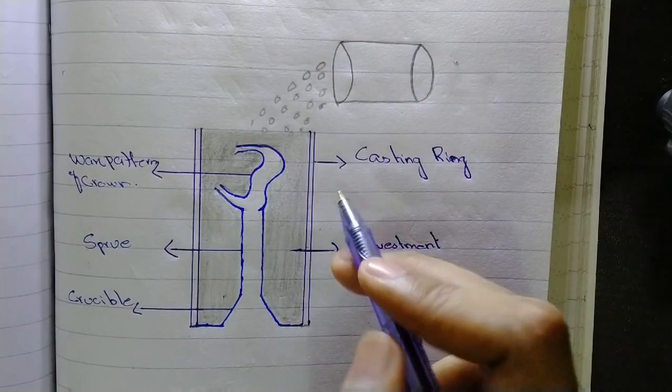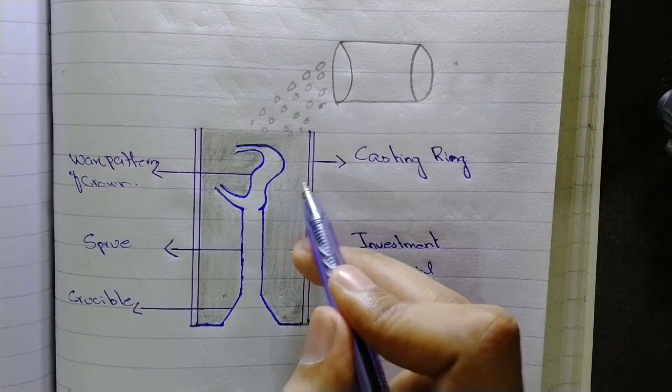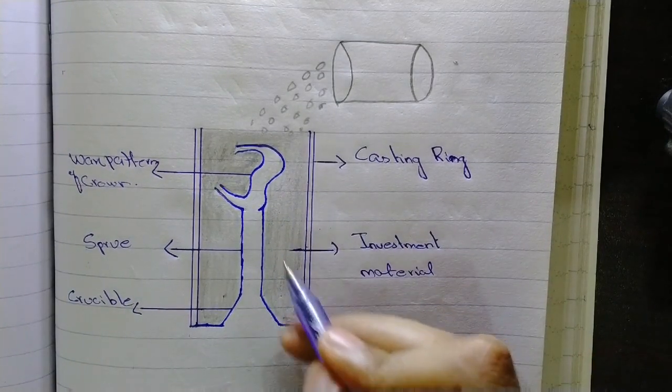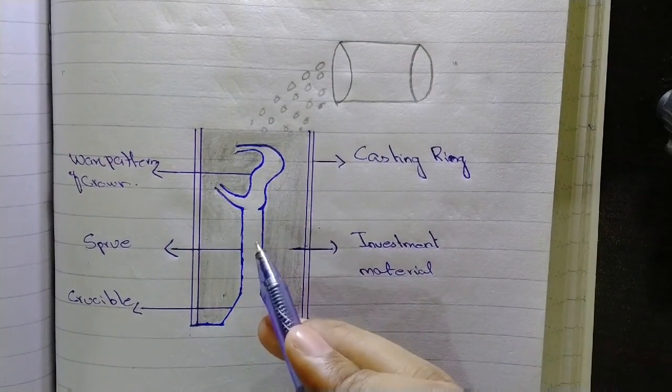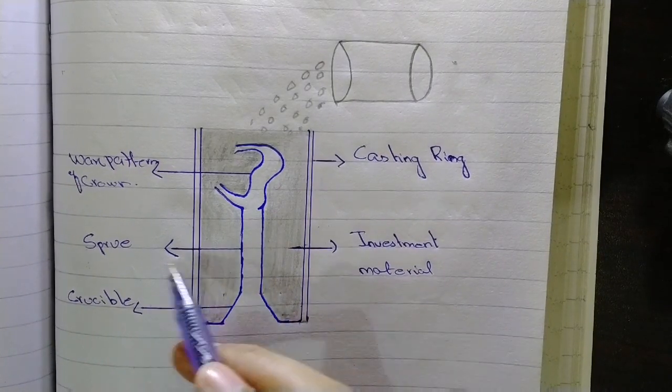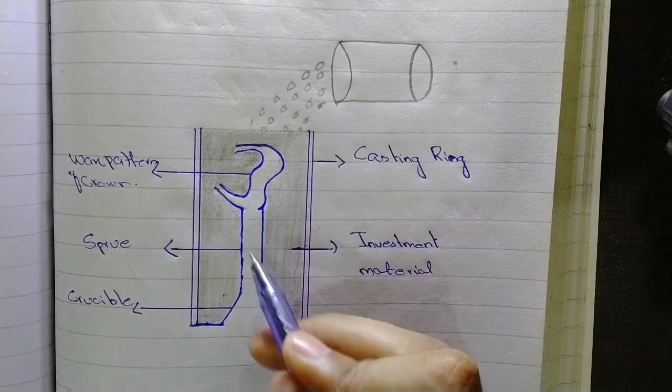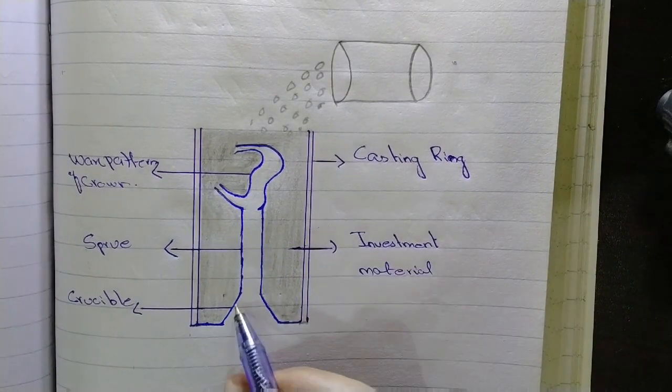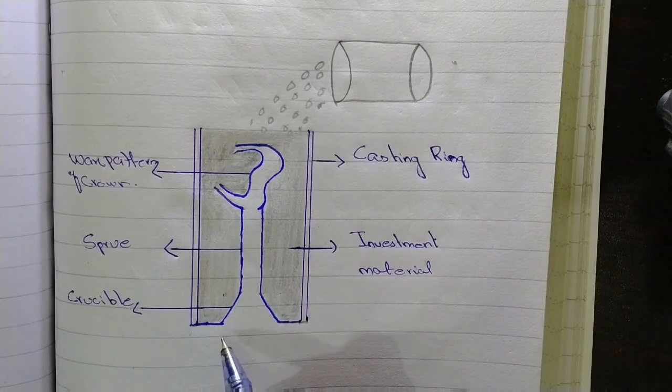Look at this picture. This is the casting ring in which the wax pattern is adapted. This highlighted part is investment material which surrounds the periphery of the wax pattern. This tunnel shape is the sprue which helps the molten alloy get into the mold.